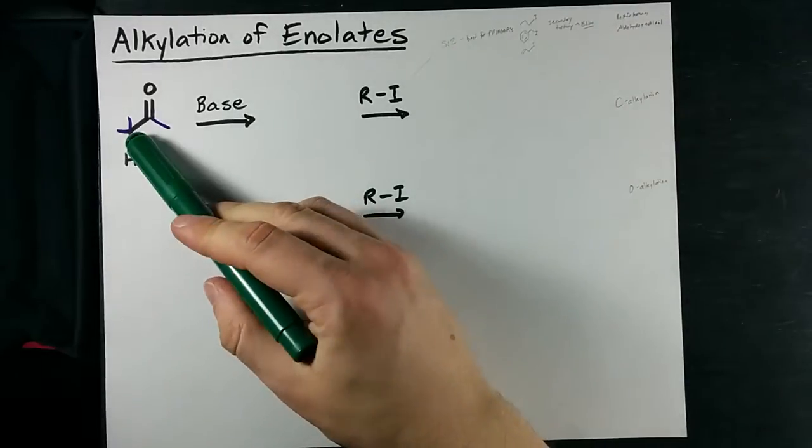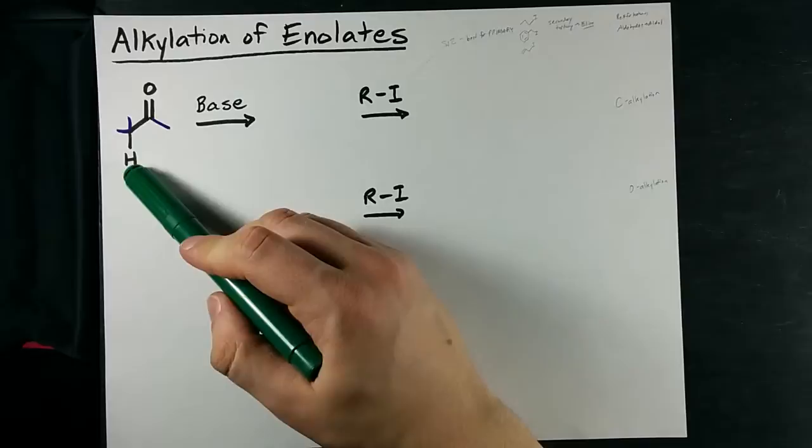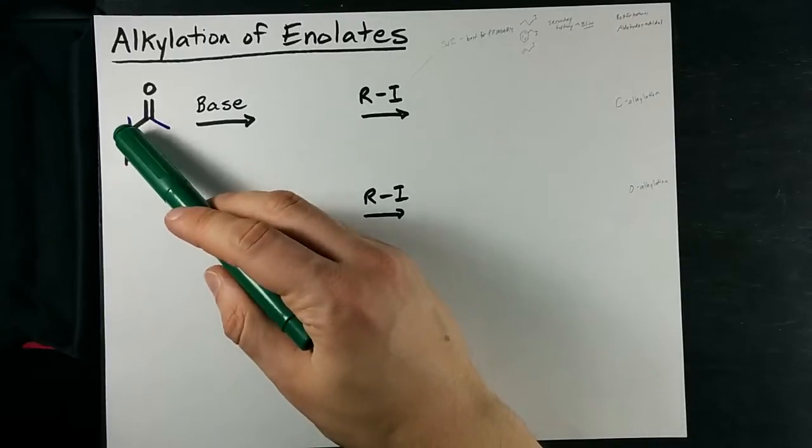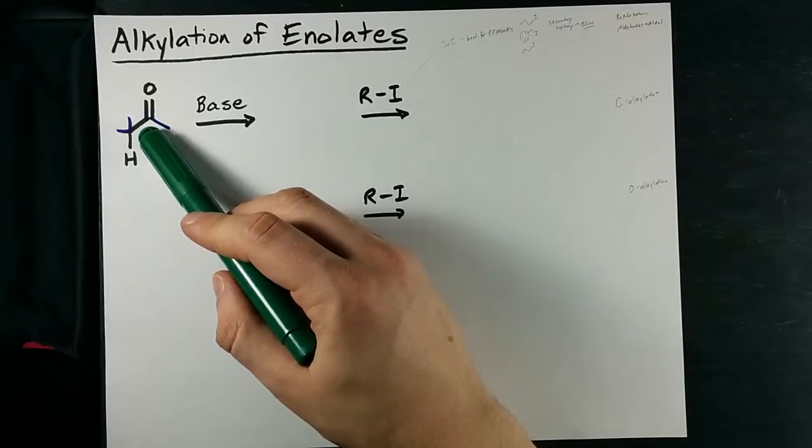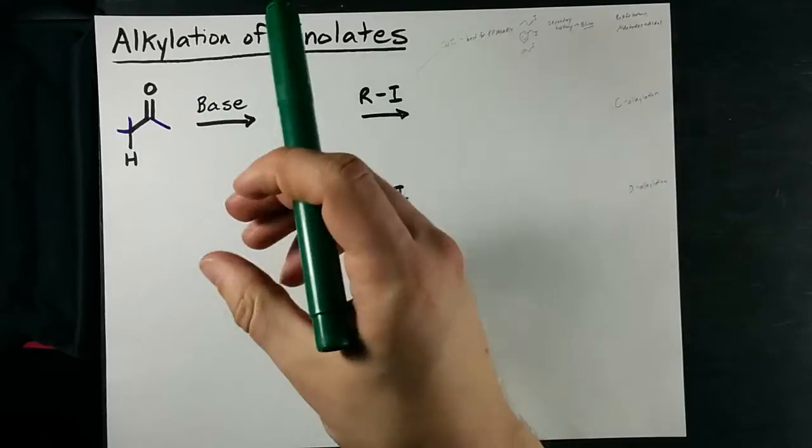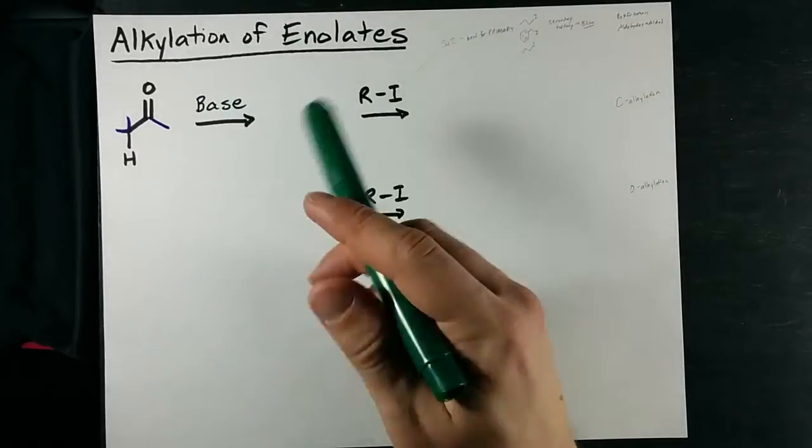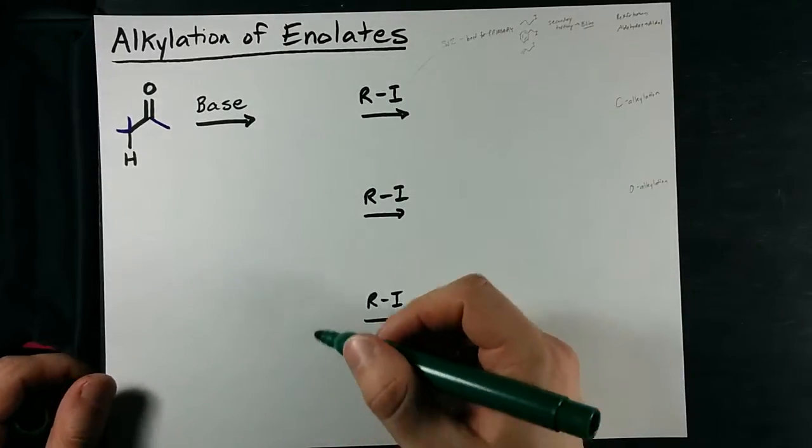What I mean by that is let's take a ketone and rip off an H that is one carbon away from the carbon that has a double bond of oxygen. We call this the alpha carbon and this H is very, or more easily ripped off than you would expect considering it's a carbon-hydrogen bond that's being broken.